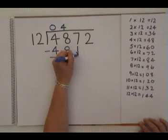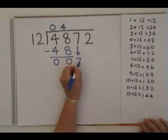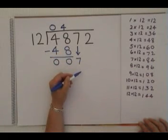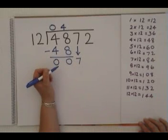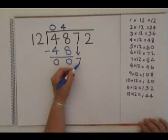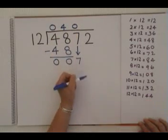Next we bring down our 7 and we say to ourselves how many times does 12 fit into 7? Again 7 is too small so the answer is 0.